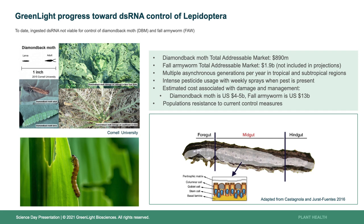Lepidopterans present significant challenges or barriers not seen with coleopteran pests. The double-stranded RNA has to survive a harsh mid-gut with a high pH. There are also several different digestive nucleases that attack the double-stranded RNA. It has to move from the mid-gut environment into the cells of the mid-gut, and then the RNA has to be available at the site of action where the RNAi process takes place.